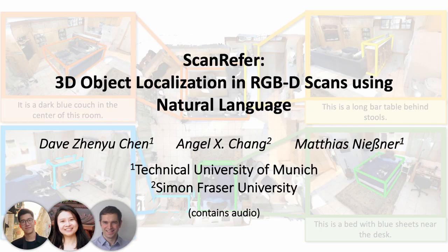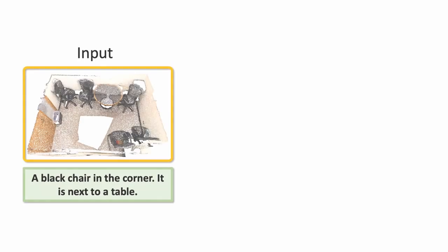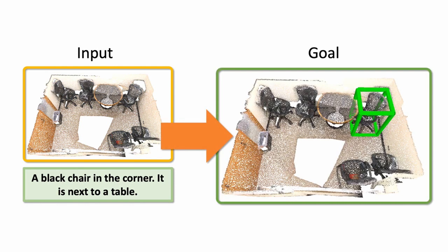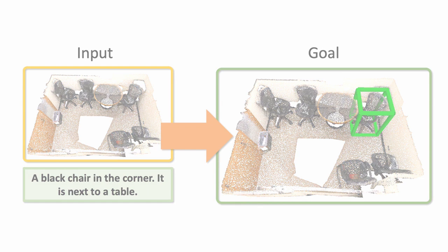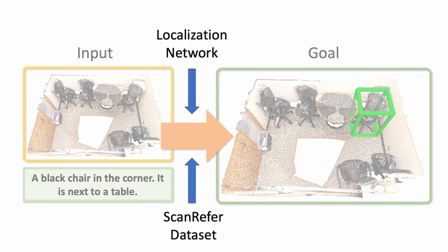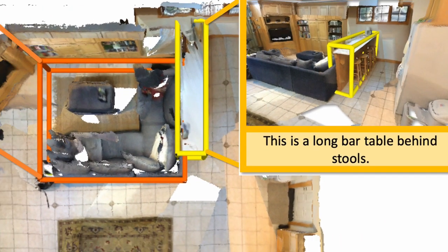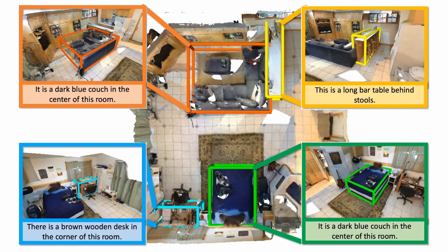We present ScanRefer, a method to tackle our new task of 3D object localization in RGB-D scans using natural language. Given a 3D scene and a description for an object as input, our goal is to output the 3D bounding box for the object. We introduce a localization network and the ScanRefer dataset for training and benchmarking. For the provided ScanNet instances, we collect the associated descriptions regarding the object's appearance as well as relative spatial location information.